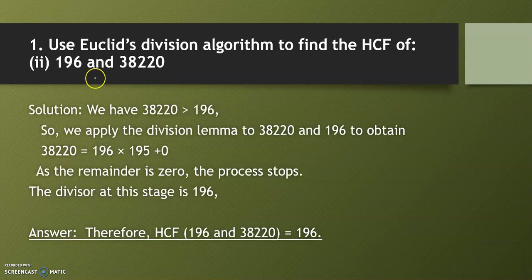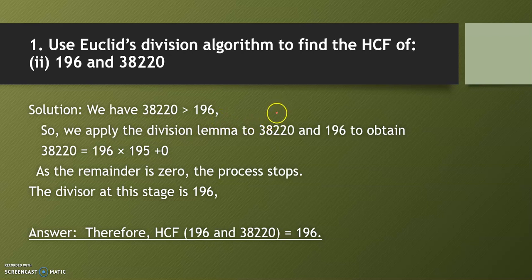Now question (b): HCF of 196 and 38,220. When you compare both numbers, 38,220 is greater than 196. So 38,220 will be our A and 196 will be our B.